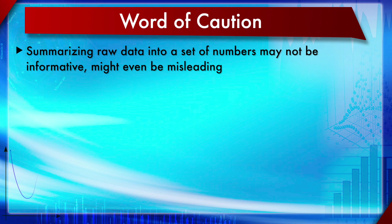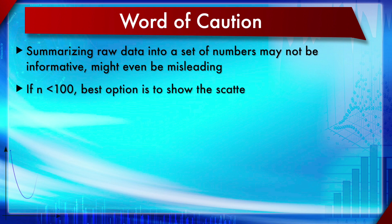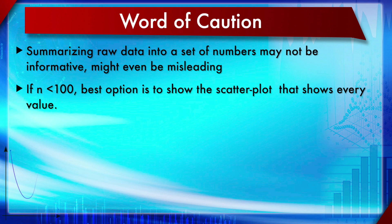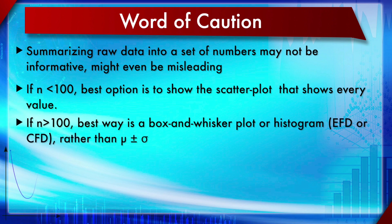My word of caution: summarizing raw data in a set of numbers may not be informative and might even be misleading — like using SEM instead of SD. That is totally misleading, especially if you do not write what the error bars represent in the figure legend. If n is less than 100, it is always better to present each and every value in a scatter plot, such as a column scatter plot.